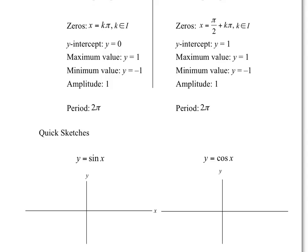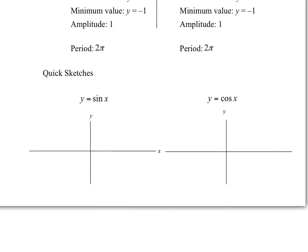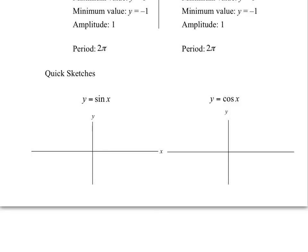And as we just mentioned, the period is 2 pi. That's the amount of time it takes to go from start to finish — that distance is 2 pi. For the quick sketches, if I ask you to do a quick sketch of sine x, simply: it starts at 0, you go up and over, so this would be 2 pi.